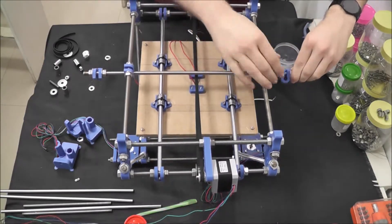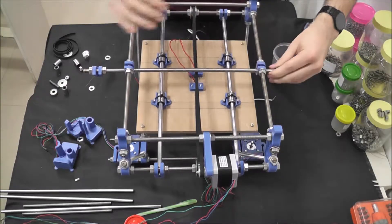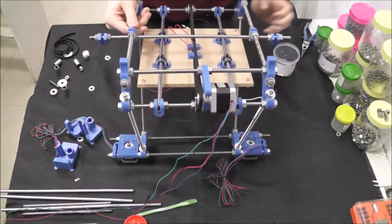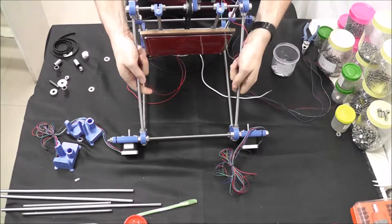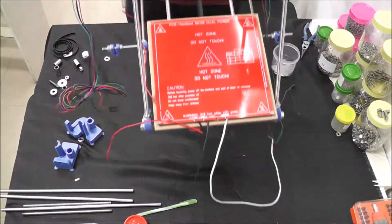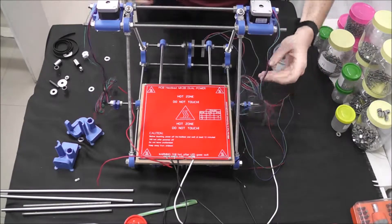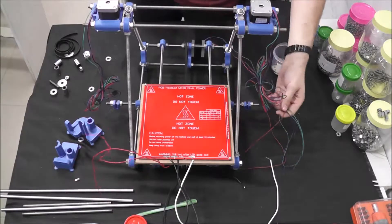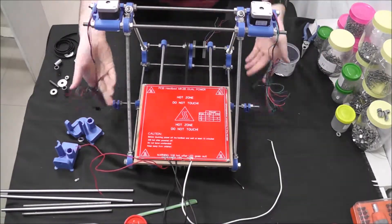Now this is on. We don't want to tighten that just yet because we need to slide our smooth rods in there. We need to flip this back over and make sure that the Z mounts and the holes on these line up. You can actually go ahead and probably stick the rods in there and just line it up based on your sight. Let's get these wires out of the way.